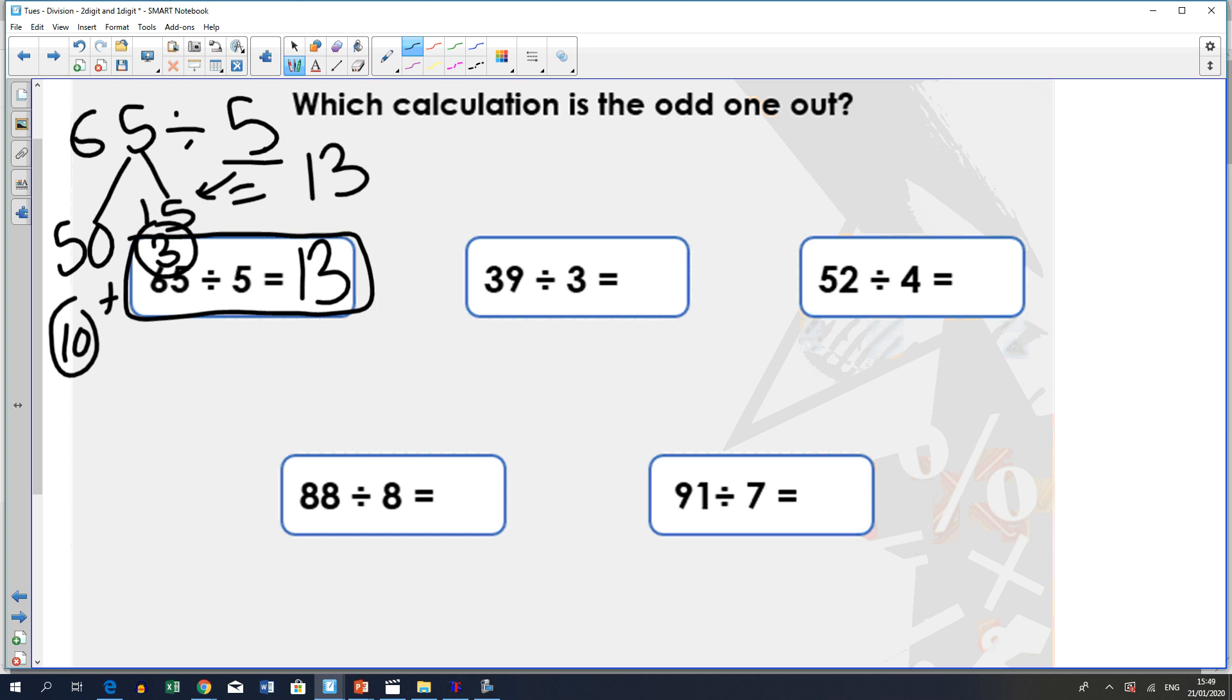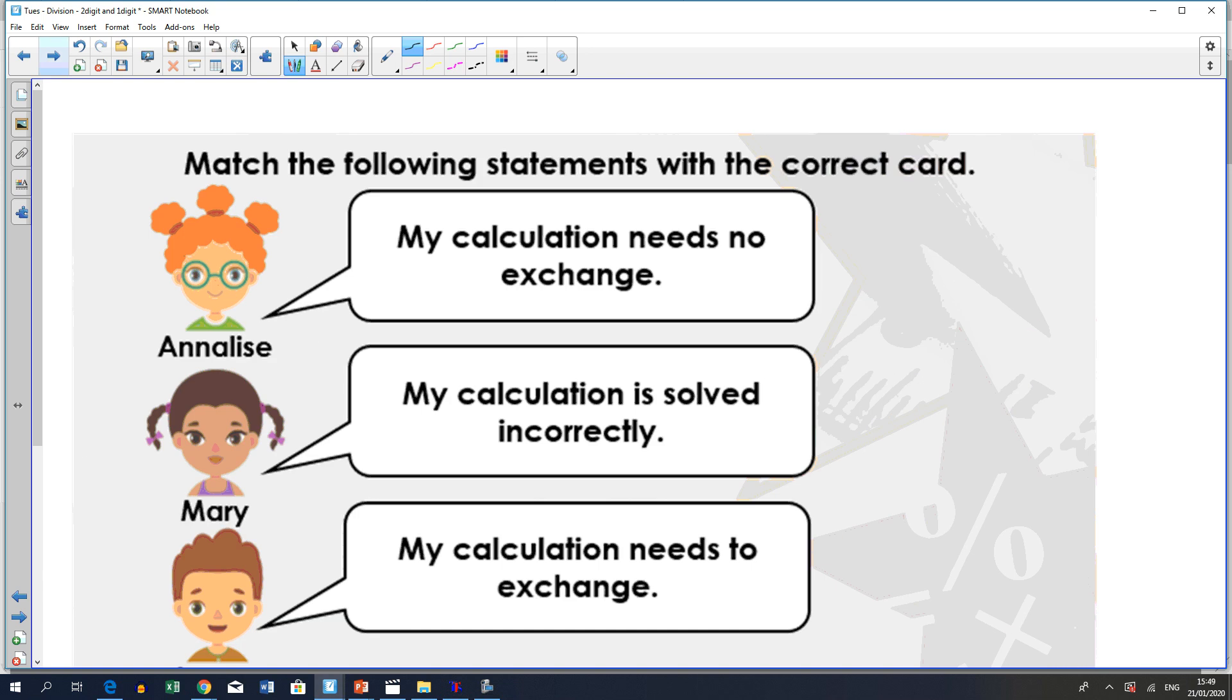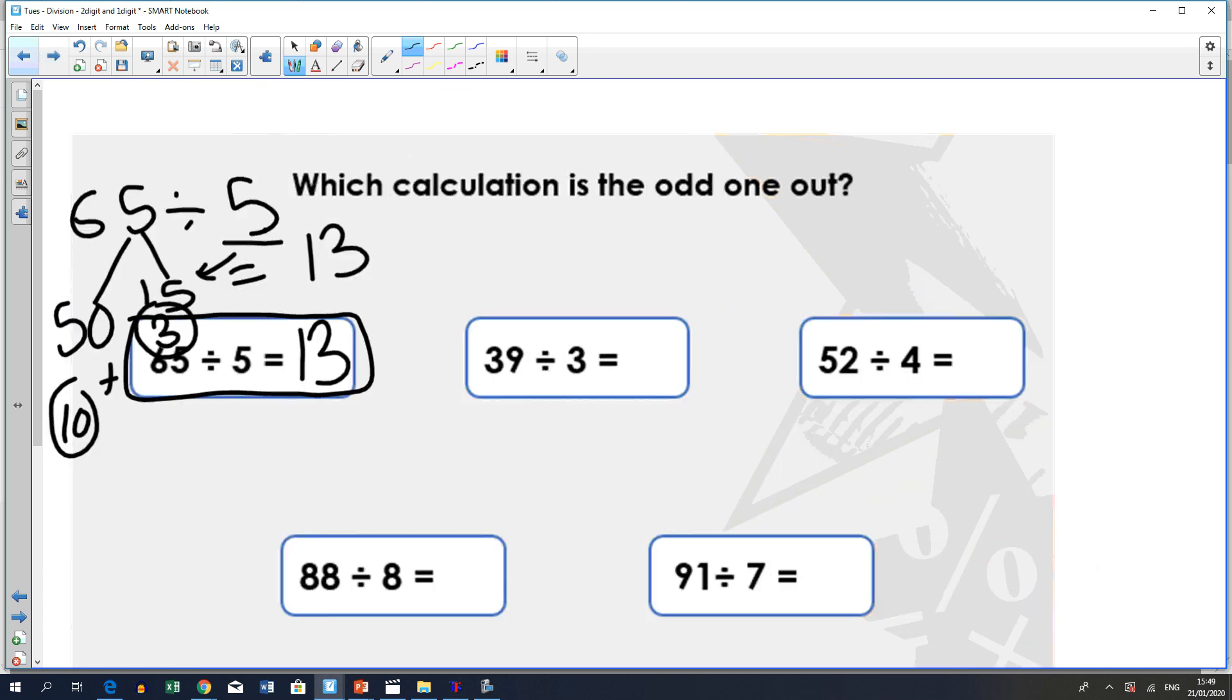I hope that was okay. Here are the answers. Oh, the answers are not in here. But you'll notice that most of them are 13, the answer is 13 and then this one is 11. So, this is the odd one out. The answer for this is 11 and the rest are 13.